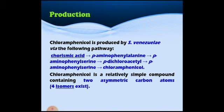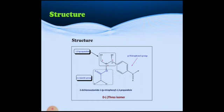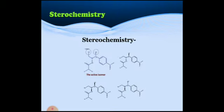Chloramphenicol is a relatively simple compound having two asymmetric carbon atoms, meaning four isomers are possible. As seen in the structure, the dextro-threo isomer is active against bacterial activity, while the other three are inactive. Only the dextro-threo isomer is active. The stereochemistry shows the active isomer.